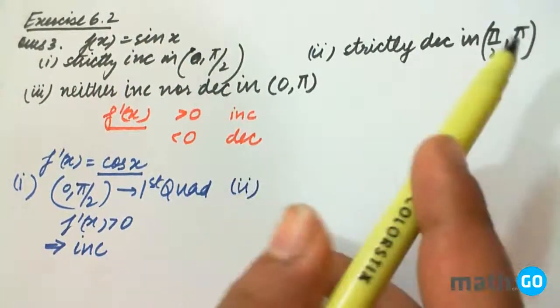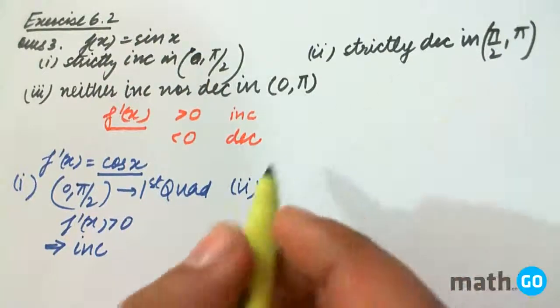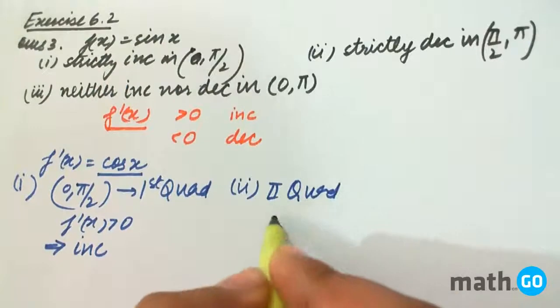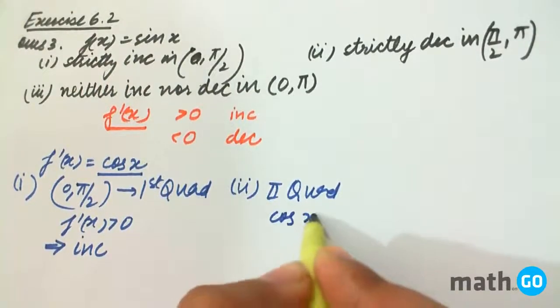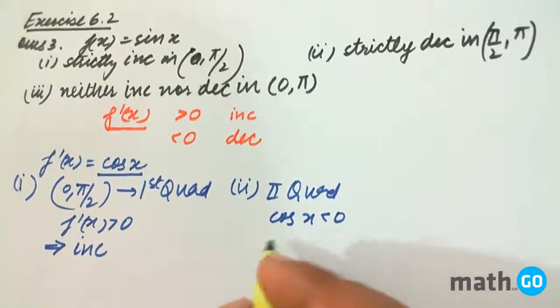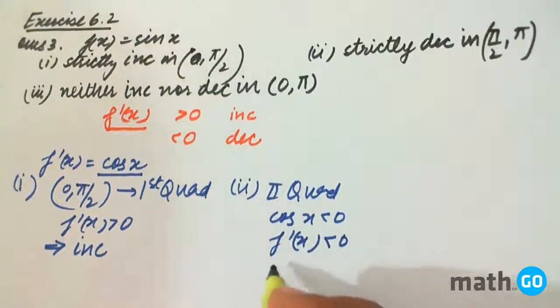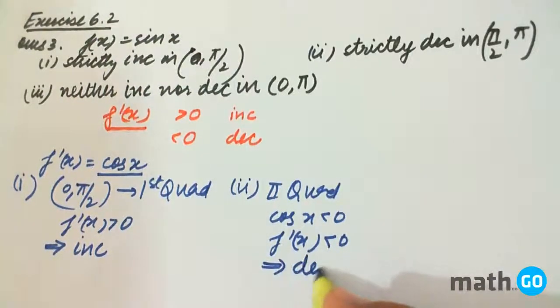Second, π/2 to π. So π/2 to π is second quadrant, and we know that cos x is negative in the second quadrant, or in other words, f'(x) is negative. That means it is strictly decreasing.